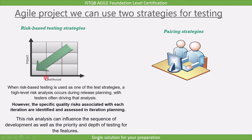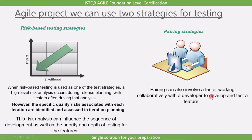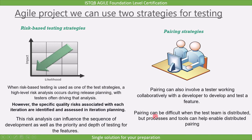The whole idea of this testing is to reduce the risk. In some Agile practices, for example in extreme programming, pairing is used. Pairing can involve a tester working collaboratively with a developer to develop and test a feature. Pairing can be difficult when the test team is distributed, but processes and tools can help enable distributed pairing.